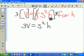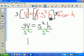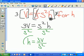Now what's standing in the way of H being alone? The S squared. They're being multiplied together. How do we get rid of multiplication? With division. So we're going to divide each side by S squared. H equals 3V over S squared.